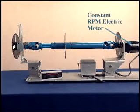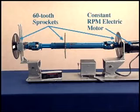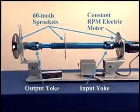This demonstration unit consists of a constant RPM electric motor and 60-tooth sprockets on the driveshaft as well as the input and output yokes.